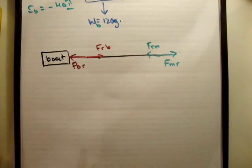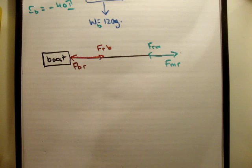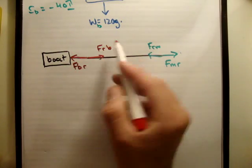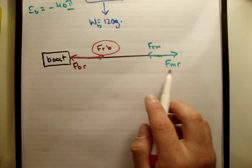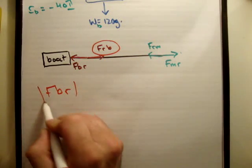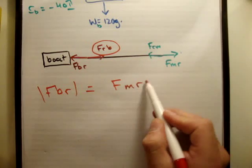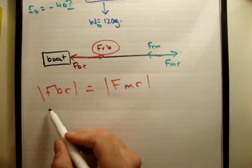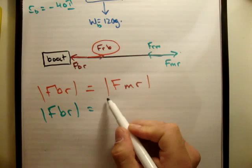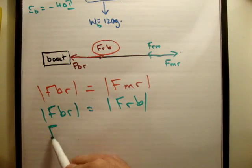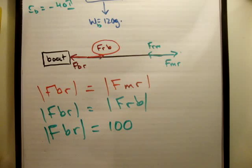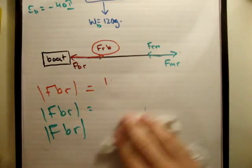The only force on the boat is frb, but we just found that fbr is equal in magnitude to fmr. These are not action-reaction pairs, but these two are. Therefore fbr equals 100 units, and you get 100 units acting on the boat.